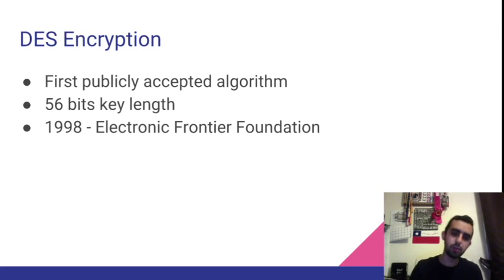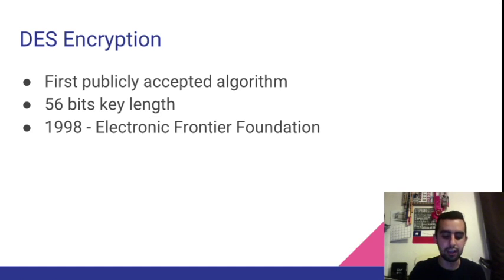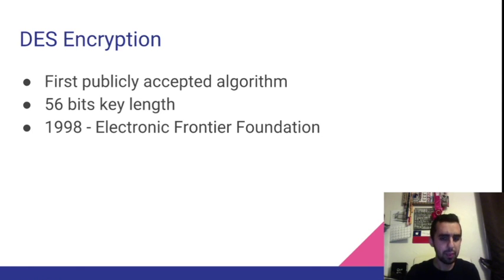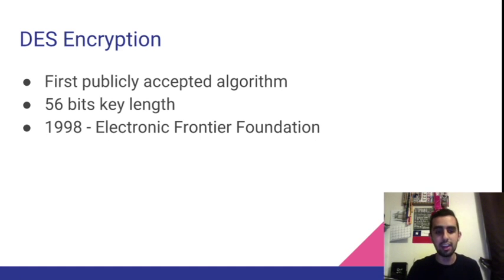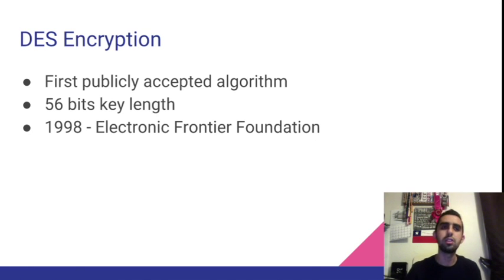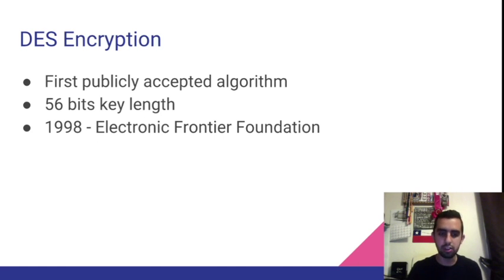DES encryption was the first publicly accepted algorithm. It was developed in the 70s and used a 56-bit key length, which meant you had a possibility of generating 2 to the power of 56 keys, or about 72 quadrillion automated keys. At that time, computers were still developing and it wasn't a commonly consumed item, so they thought no one would ever generate all these keys. That only lasted until 1998, where the Electronic Frontier Foundation took it upon themselves to see if they could generate all these keys. Due to Moore's Law — which states that the processing power of a computer doubles every 18 months to 2 years — with $2,000 worth of equipment and in three days, they were able to generate all the keys.